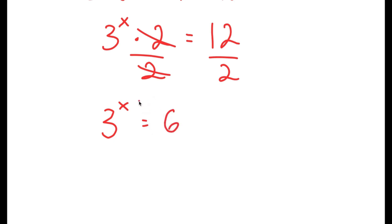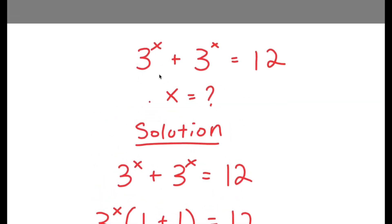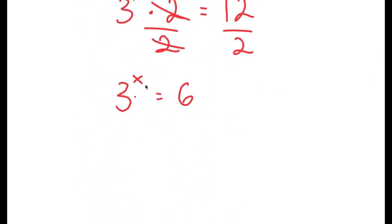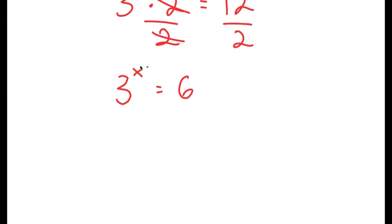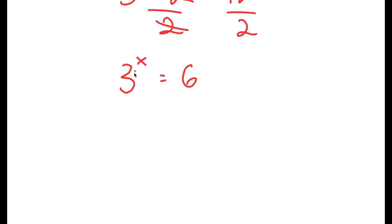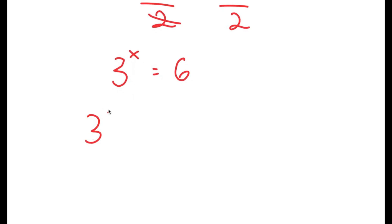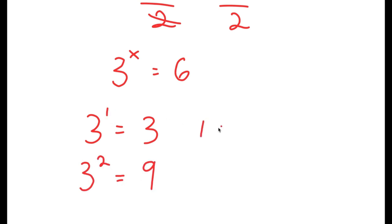Now I have a more simplified equation: 3 to the power of x is equal to 6. To solve this, we know that x is going to be a decimal because 3 to the power of 1 is 3 and 3 to the power of 2 is 9. So x is going to be somewhere in between 1 and 2.